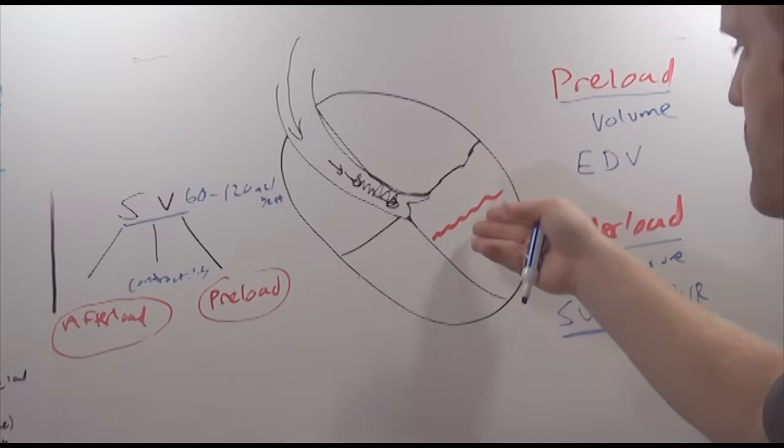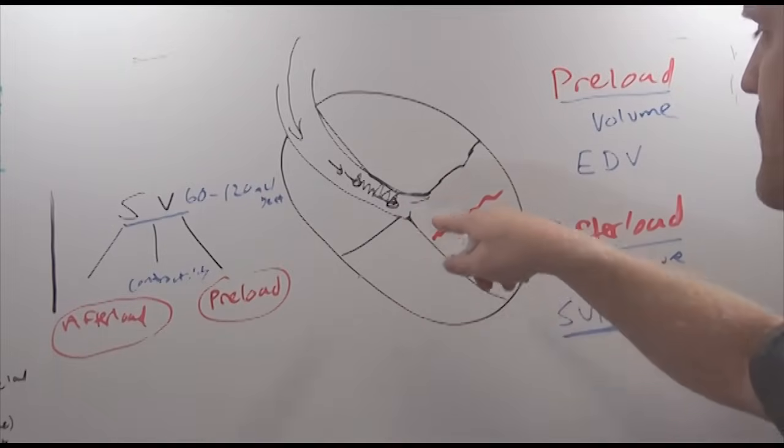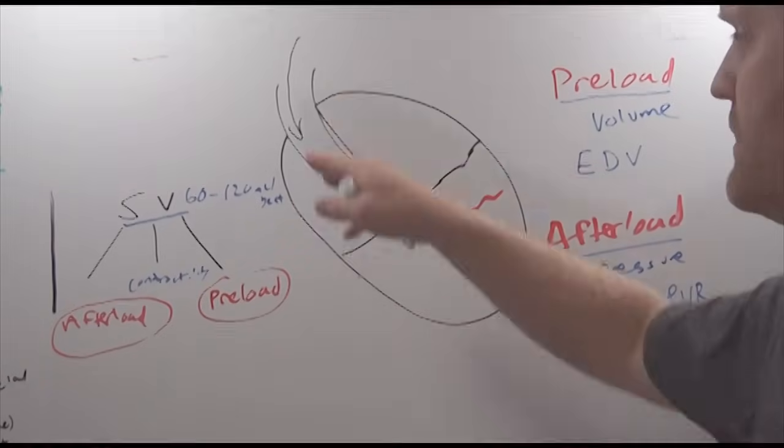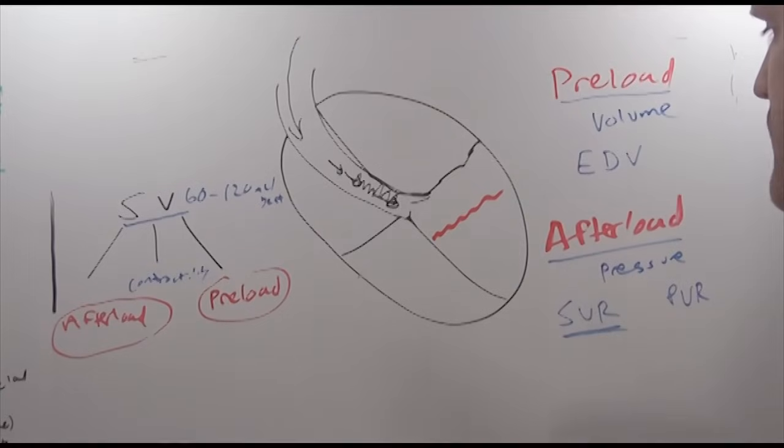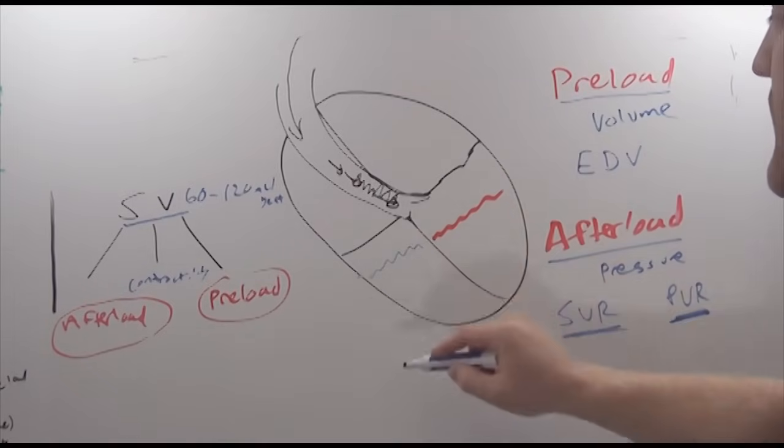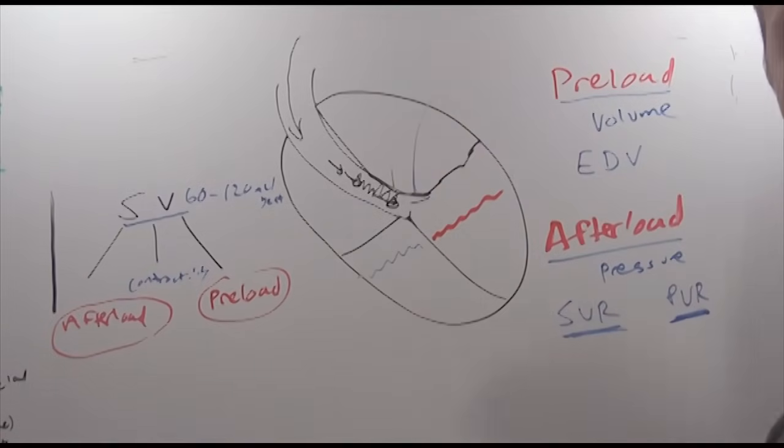So in order for blood to get out of the ventricles, it has to open this aortic valve, but in order for that to happen, the pressure in your left ventricle has to be greater than the pressure distal to the aortic valve. So that is your systemic vascular resistance. Pulmonary vascular resistance is referring to the pressure required over here in the right ventricle to open the pulmonic valve.